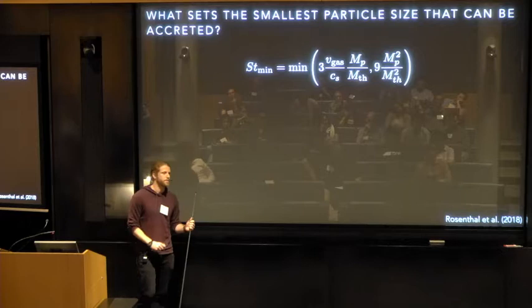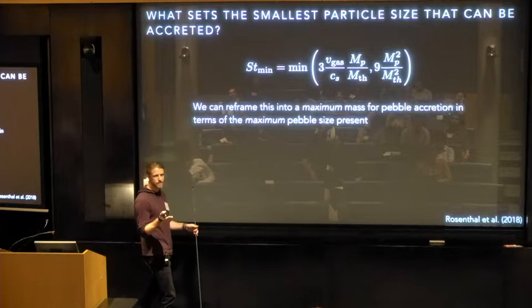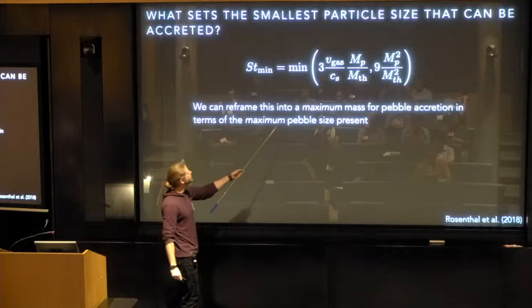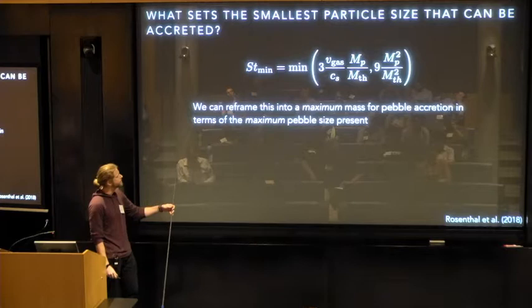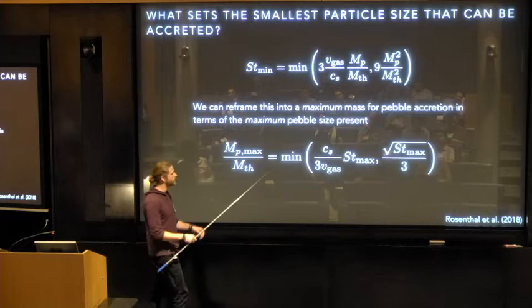So we thought this was interesting, and we put it in our models, but then after a while, one thing we started thinking about was, well, if there is only Stokes numbers present up to some maximal size in your disk, then if your core gets so big that you can't accrete particles below that maximal size, accretion will just shut off entirely. Right? So that's the key point here. We just need to invert this expression here, which is now given as a function of, which gives the Stokes number as a function of core mass, and invert that. And what you end up with is a very simple scaling that scales very nicely with the thermal mass. You have the minimum of these two quantities, either one that scales linearly with the Stokes number or one that goes like the square root of the Stokes number.